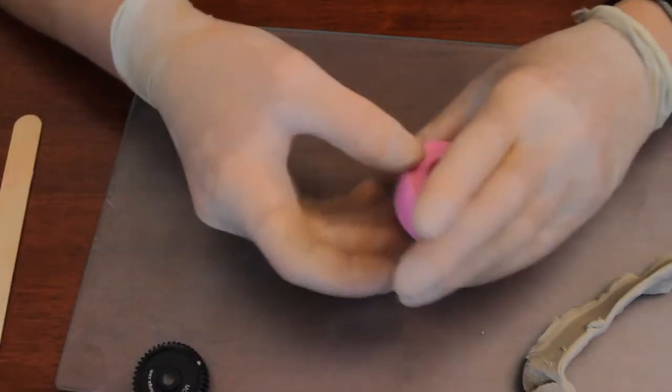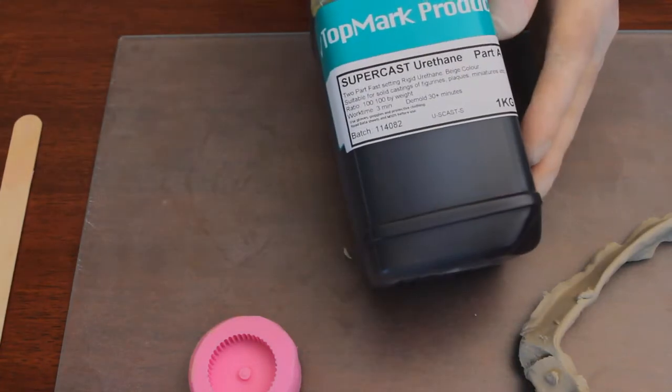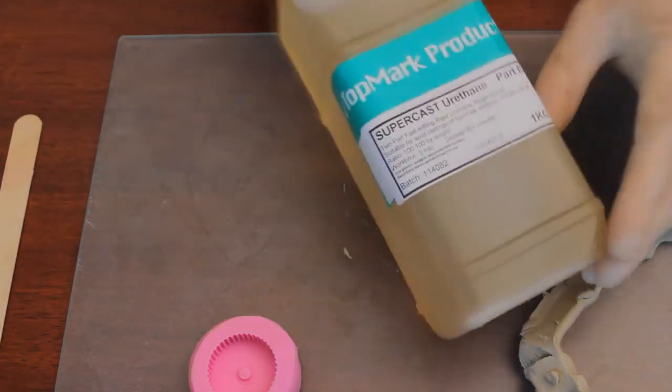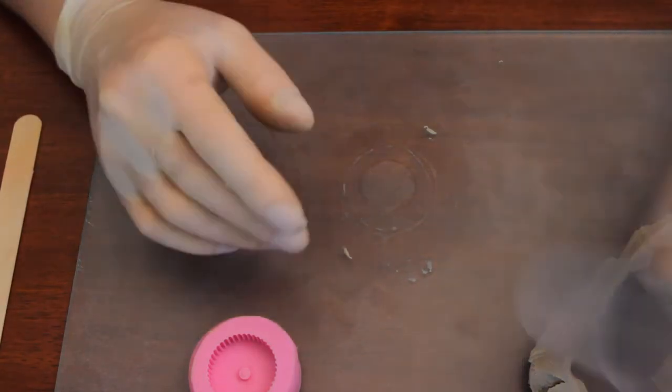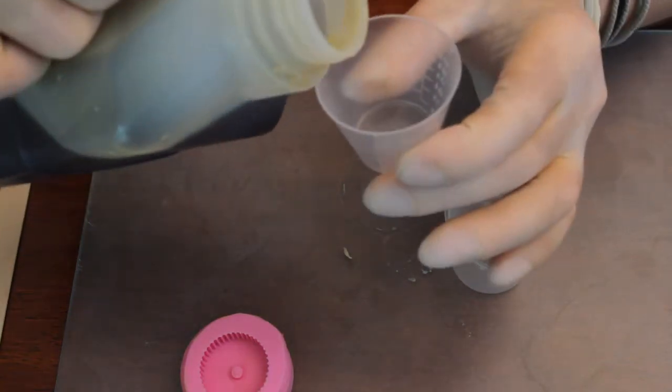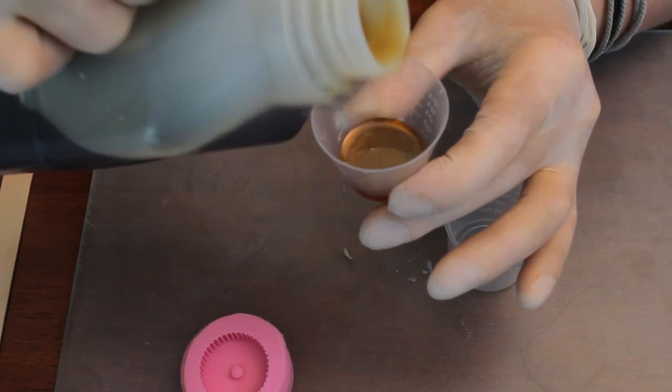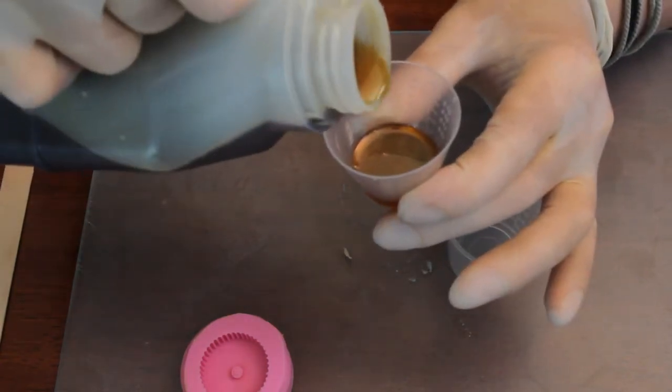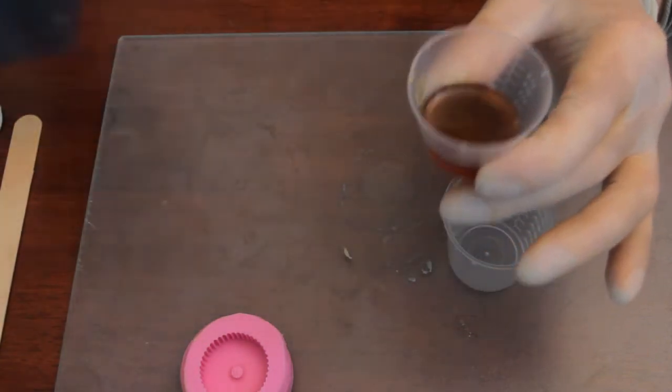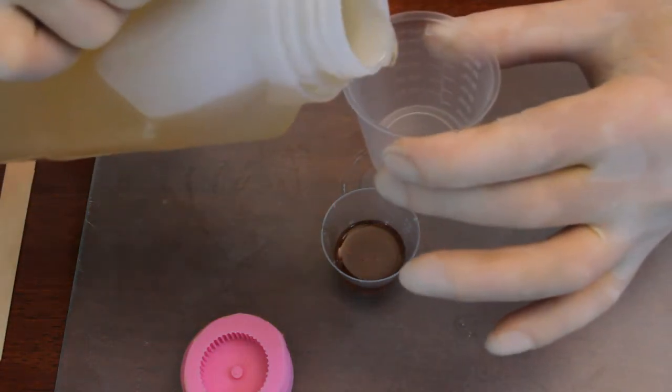Yep and it's done. Now I'm gonna pour resin Supercast. That's again a two-part product and it's like plastic and curing time is half an hour again. Two cups. It's a bit tricky to pour from such a big container.